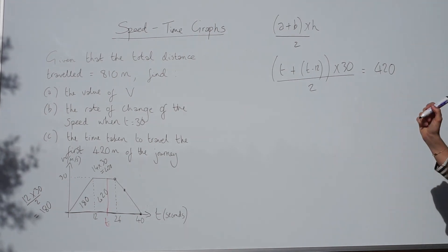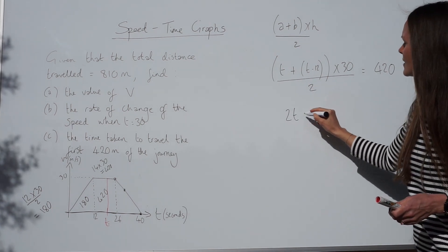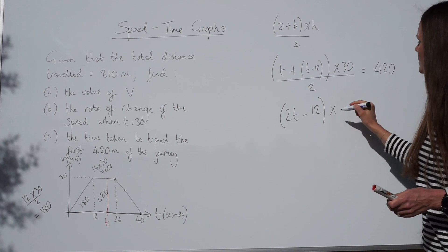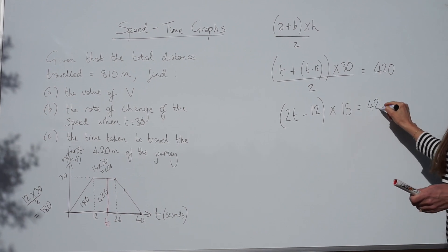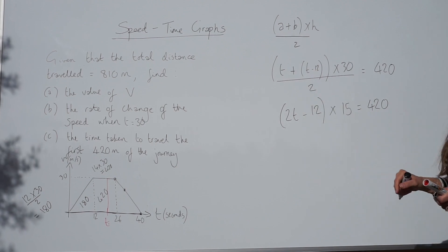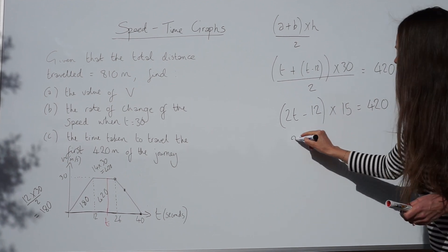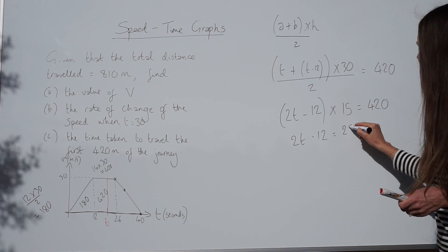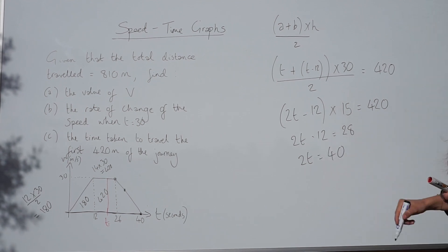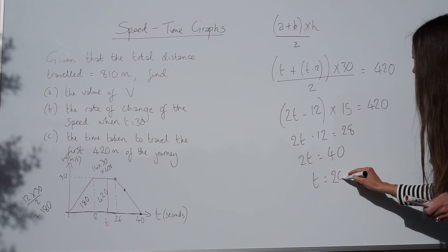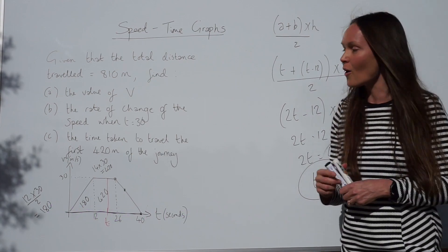Now we can solve this equation to find T. So if I just tidy this equation up a little bit, T plus T is 2T. And we're still timesing by 30, but we could simplify this. 30 divided by 2 is 15. So all I did here was just added the T's together and simplified 30 divided by 2. Next, if I divide both sides by 15, I get 28. Then if I add 12 to both sides, I get 40. And then if I divide by 2, I find out that T is equal to 20. So that's the answer. It takes 20 seconds to travel the first 420 metres.